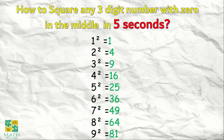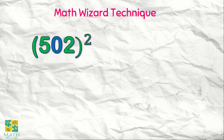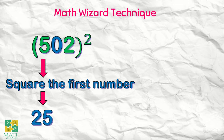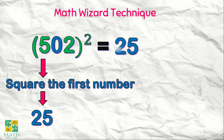Let's have our first example. What is the square of 502? Here's what we'll do. The first step is to square the first number. The first number we have is five. If we are going to square five, the answer is twenty-five. So if you have the squared numbers memorized, automatically when you hear the number five, you'll answer twenty-five. Just square the first number — we have twenty-five.